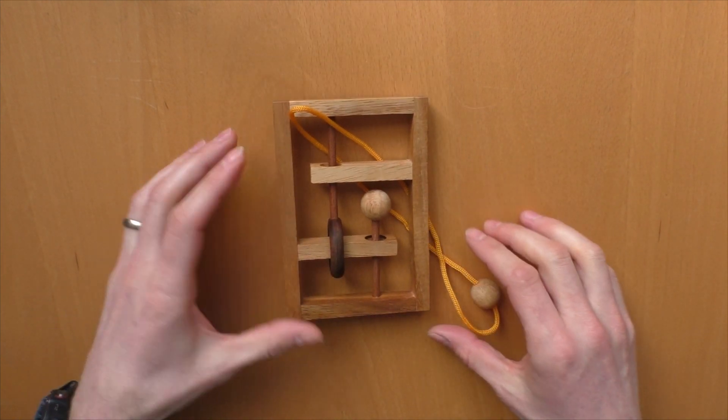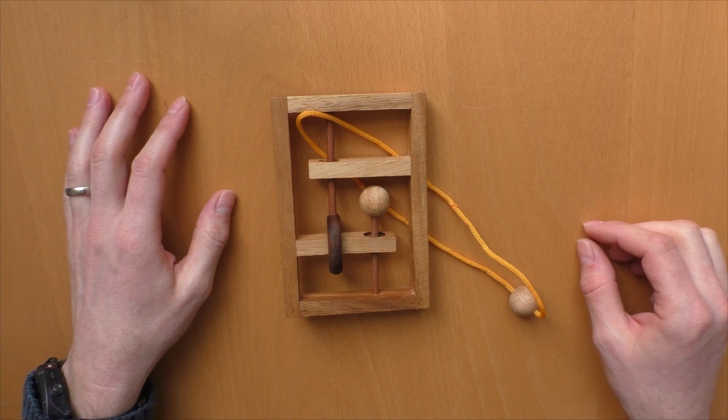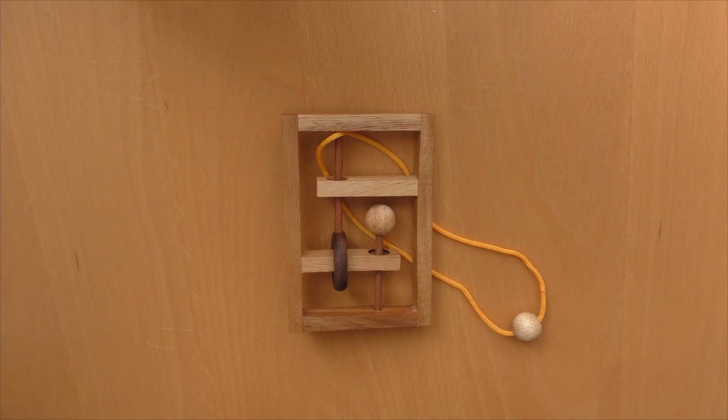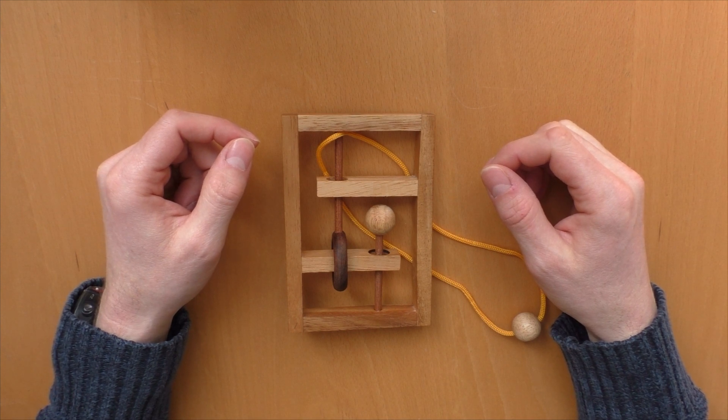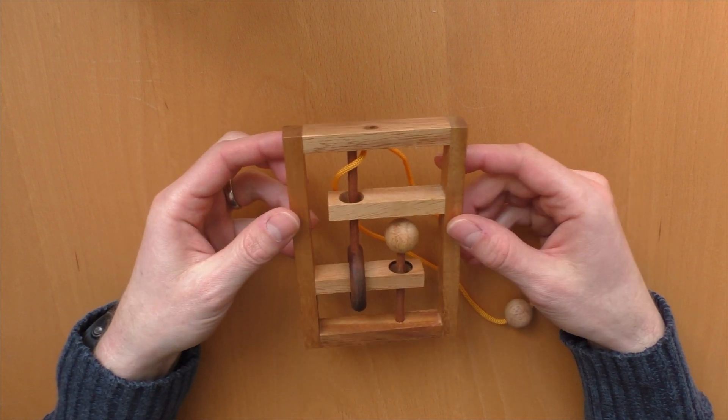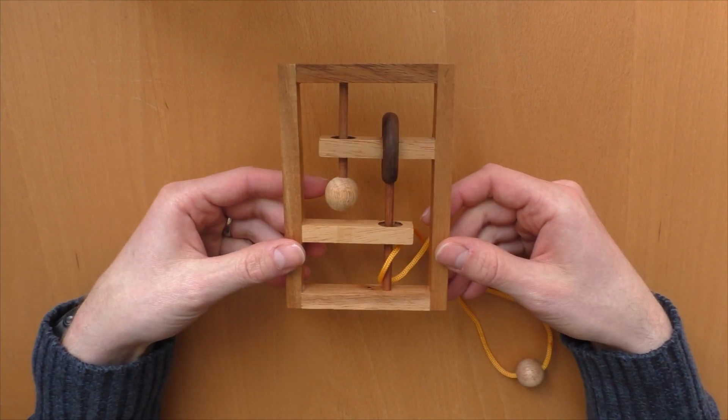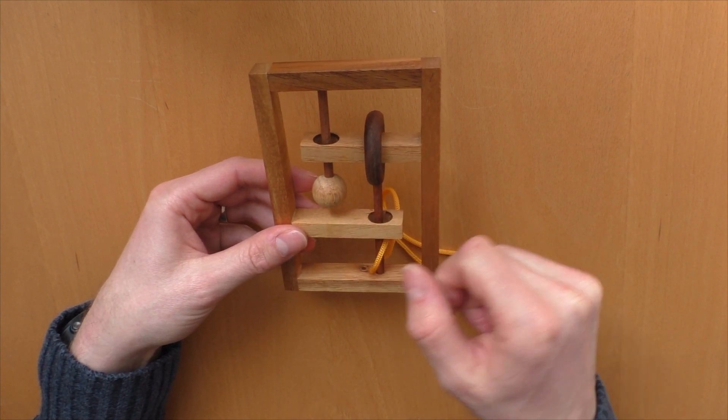And now I'm gonna show you my solution, how I did it. Okay, so, let's start. Now I'm gonna show you how to untangle the cord here from this wooden frame. To do that, we start in this position. The ring is on the upper side and the ball is in the middle.